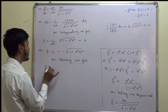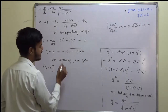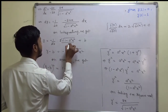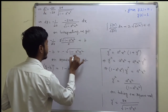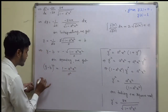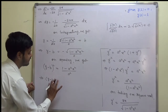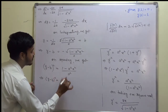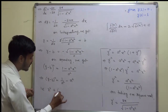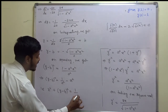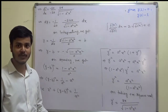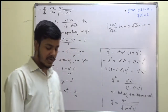Squaring both sides: (y − b)² = (1/a²)(1 − a²x²). Expanding and rearranging: x² + (y − b)² = 1/a². This is the equation of a circle of the form (x − h)² + (y − k)² = r².